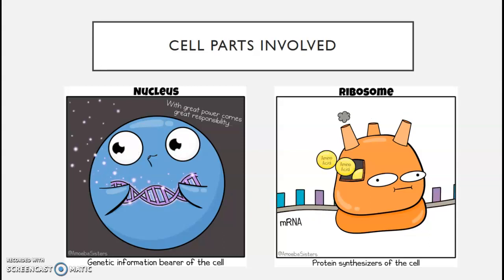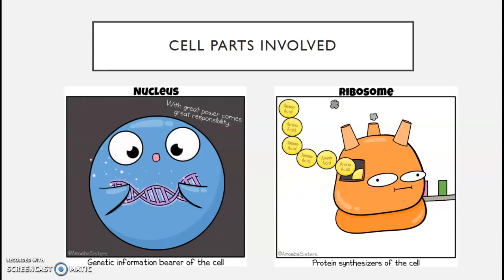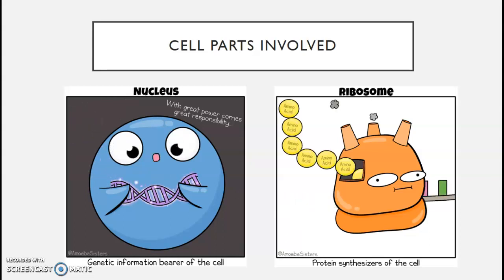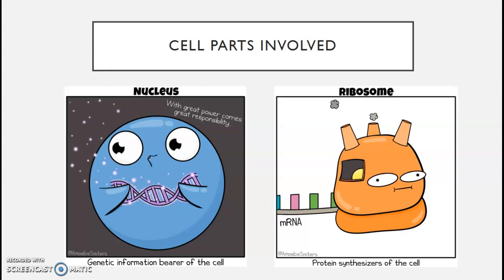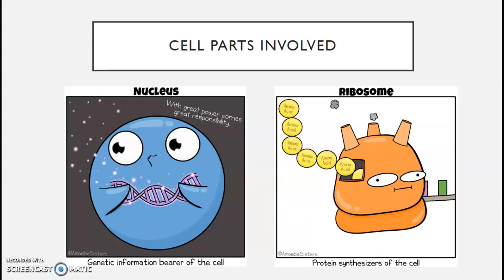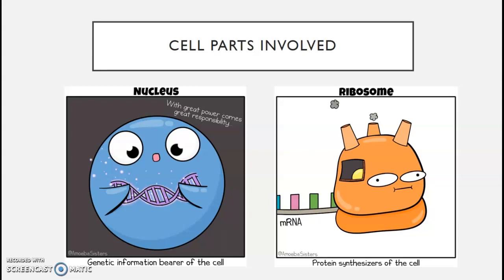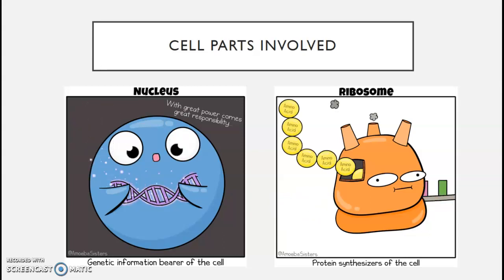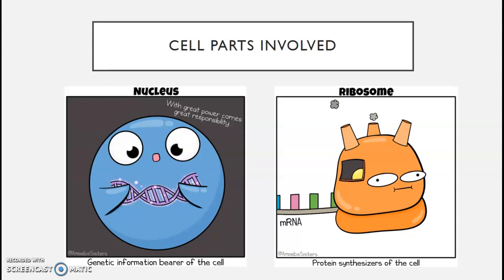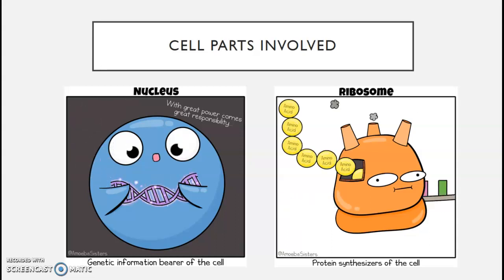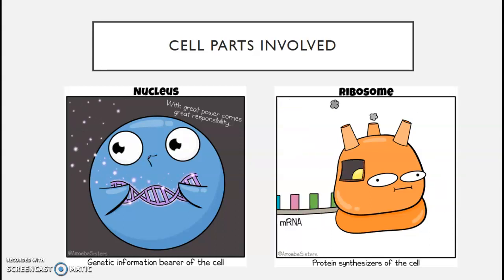The DNA code, which contains the instructions for making protein, is in the nucleus. The proteins are actually made at the organelle called the ribosome, which is in the cytoplasm. Both of these cell parts are involved in protein synthesis.